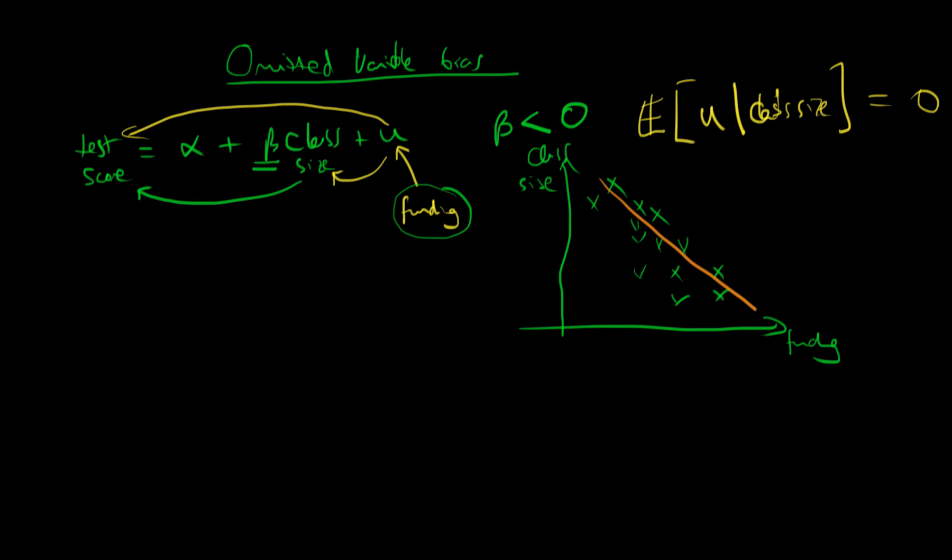So because we know that there is some correlation between class size and funding, and that funding likely affects test scores through other means, this means that the expectation of our error given class size is likely not to be zero. And we can see that because this issue, stated another way, is that the covariance between the error and class size has got to be equal to zero.